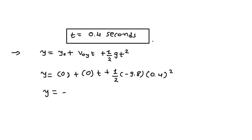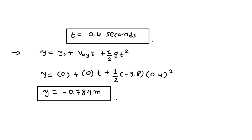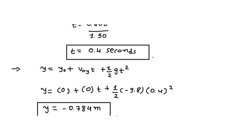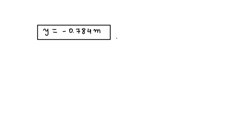Simplifying, the answer is y equals minus 0.784 meters. This is the vertical fall height of the bird — the answer to part A. Now let's look at part B of this problem.